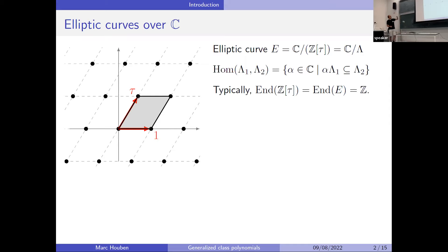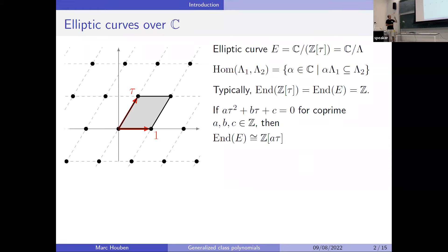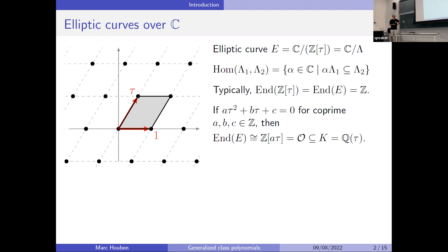Most of these elliptic curves don't have a lot of endomorphisms. When we look at the complex numbers that multiply a lattice into itself, most of the time it's just the integers — except when tau satisfies a quadratic equation. In that case, we say that the corresponding elliptic curve has complex multiplication, because some multiple of tau is in the endomorphism ring. I'll denote the endomorphism ring by 𝒪, which is some order inside the imaginary quadratic field generated by tau.